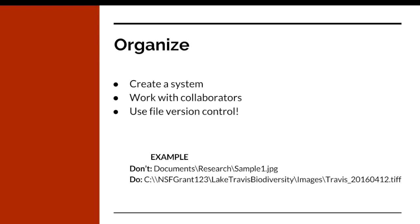Let's say you're a student conducting research on the biodiversity of Lake Travis. Part of your data are images of your samples. In this example, we created a folder named after the grant, specified the research project and location with 'Lake Travis Biodiversity,' another folder named 'images' to specify the content and type of data, and finally a meaningfully named file — travis-2016-412.tiff — meaning the image was taken on April 12, 2016, adding a descriptive layer to your file name.